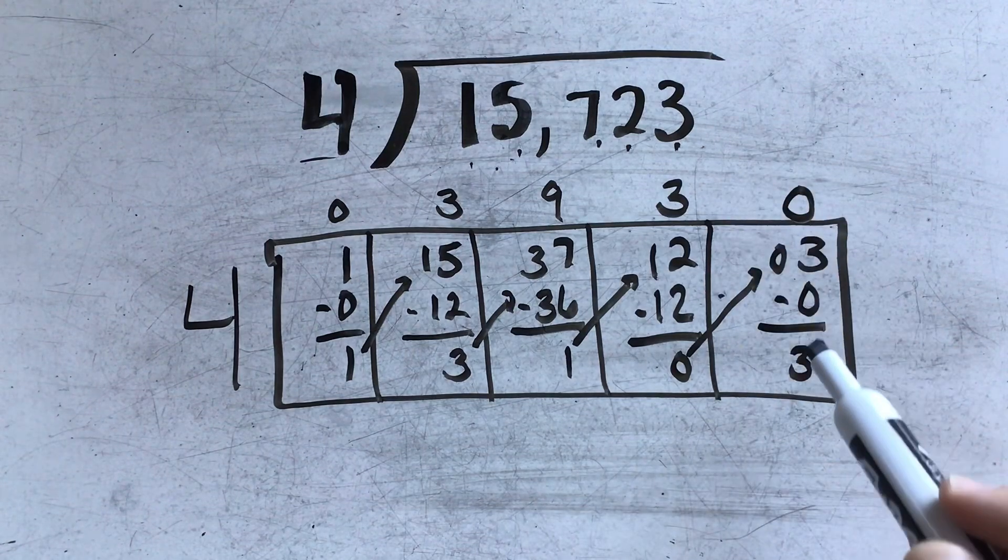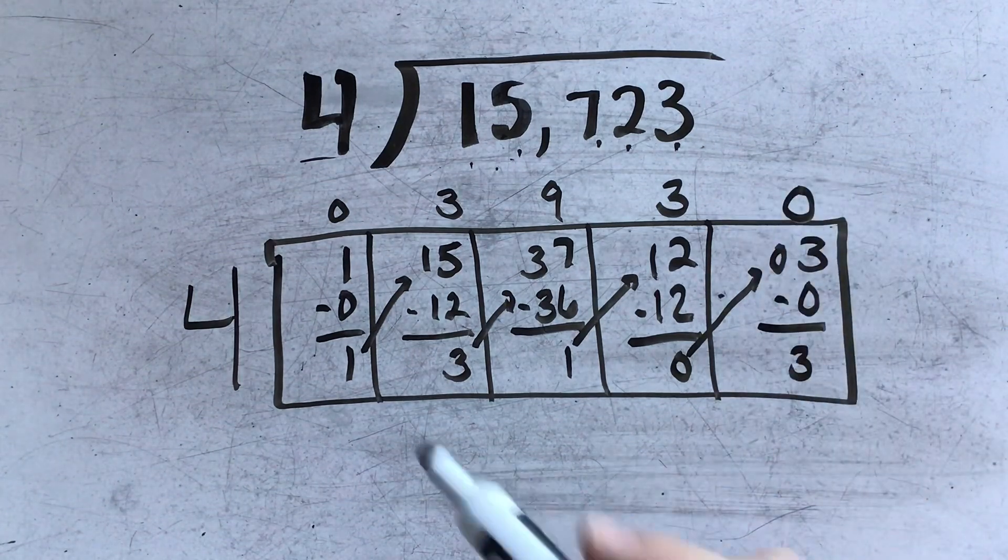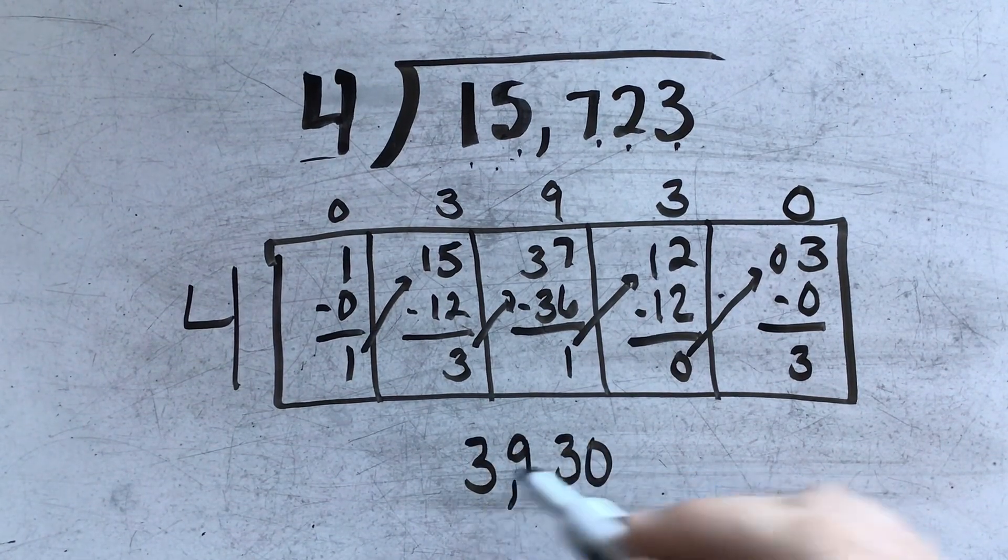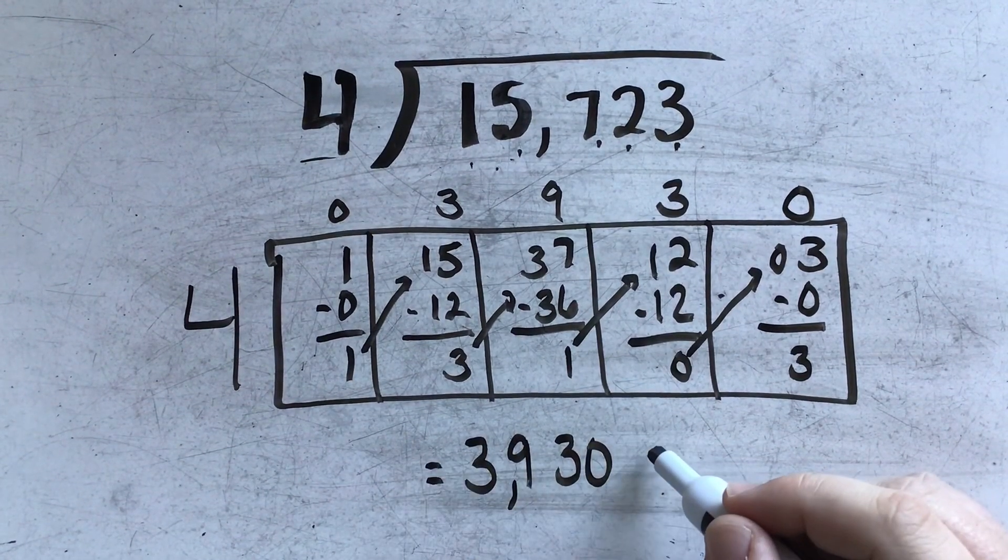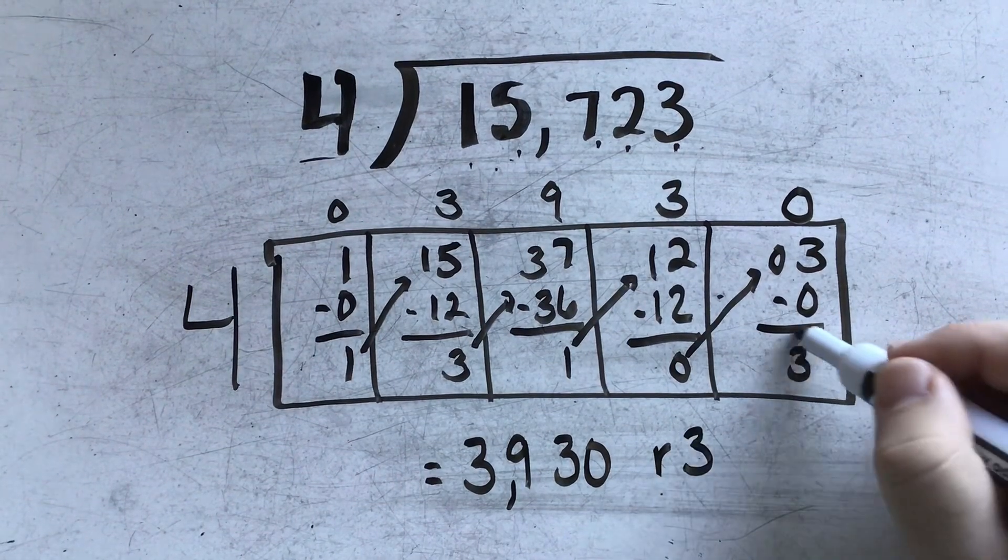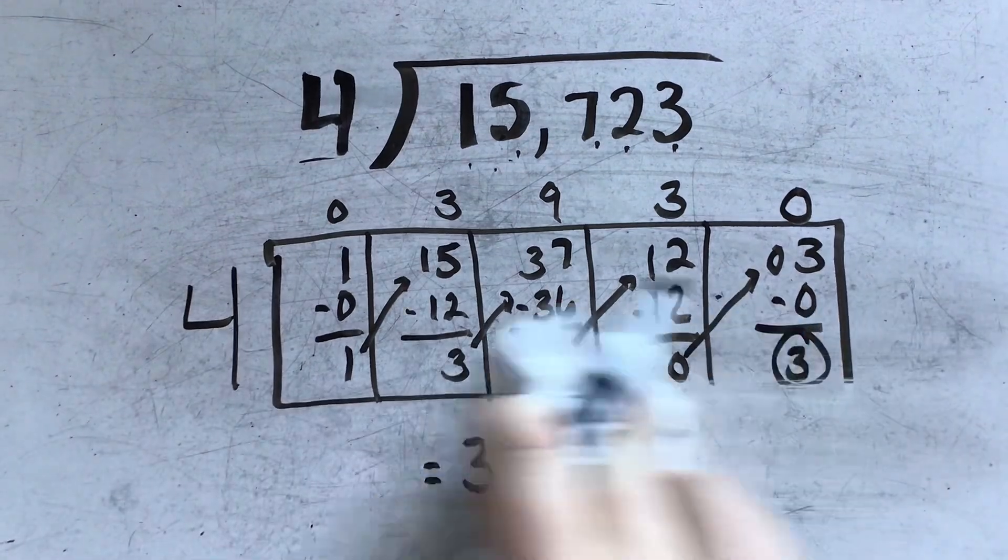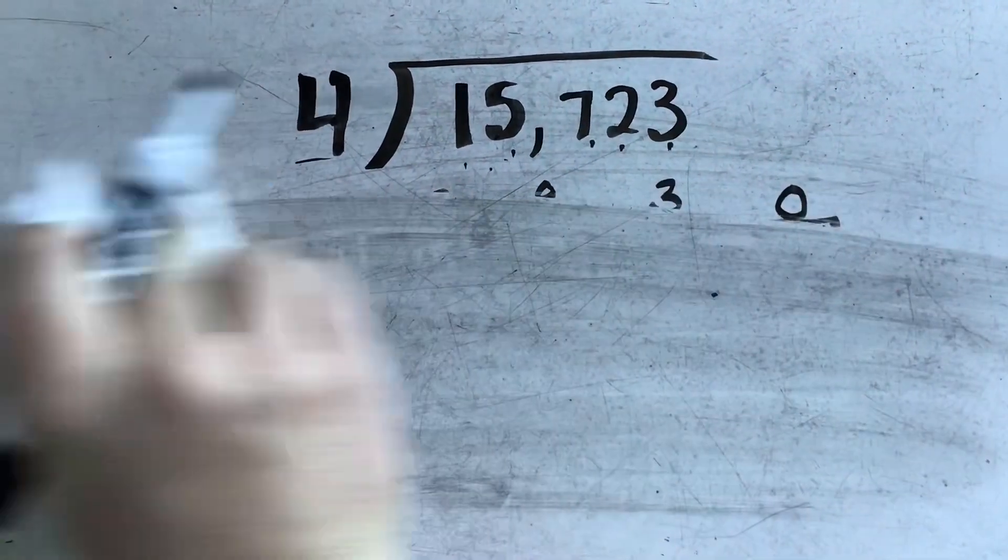But if I just bring that 3 up as a remainder, and I forget my 0, then I don't have the correct answer. So in this case, my answer is 3930 remainder 3. And we'll do one more example.